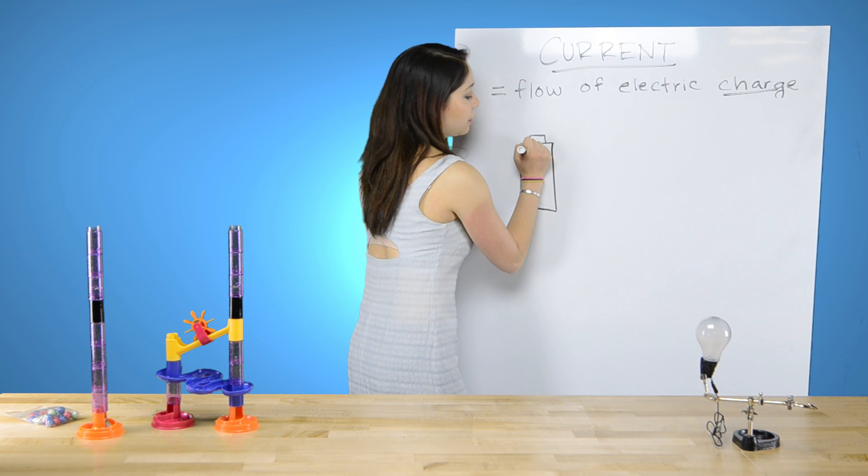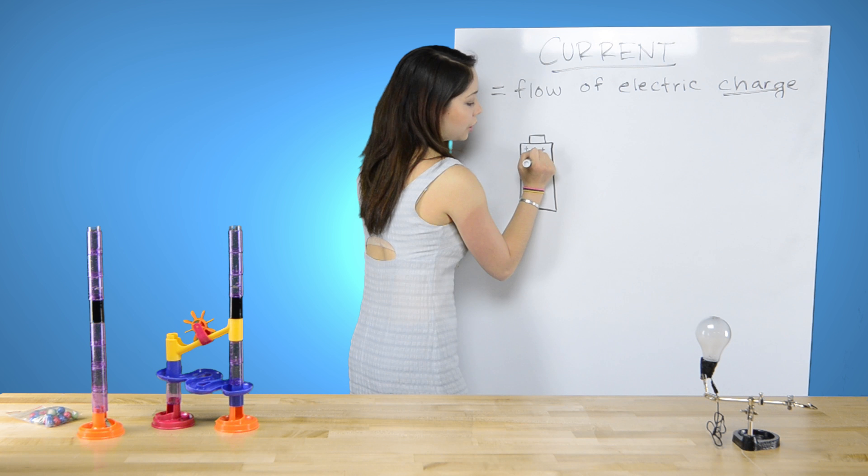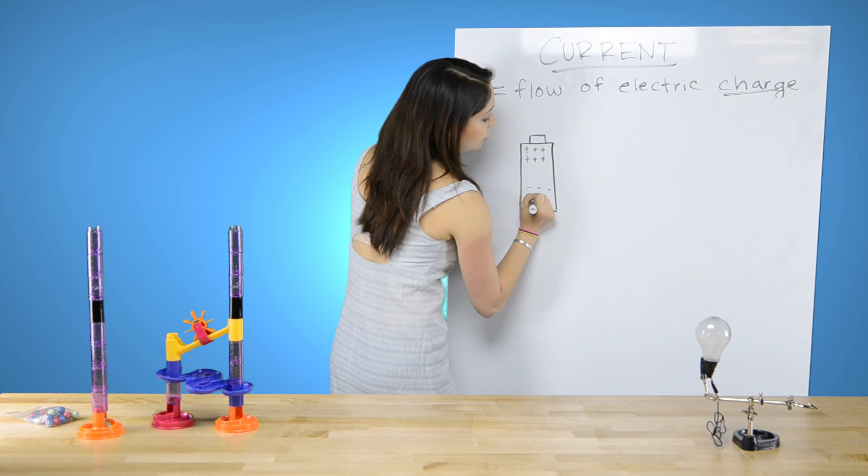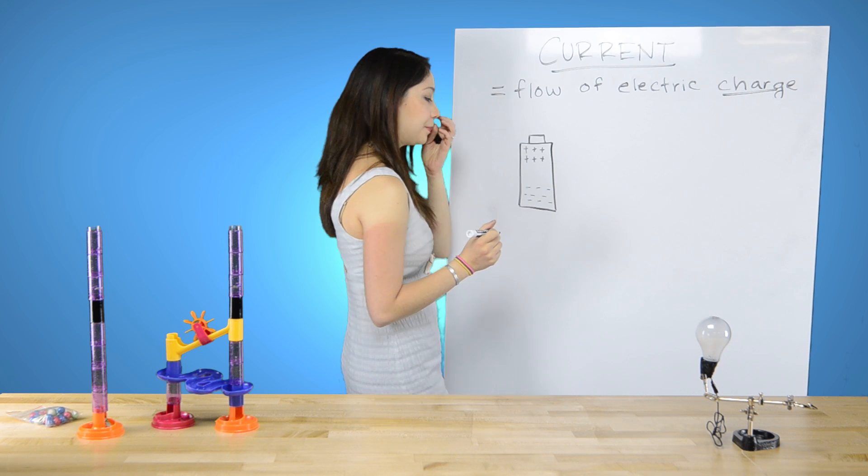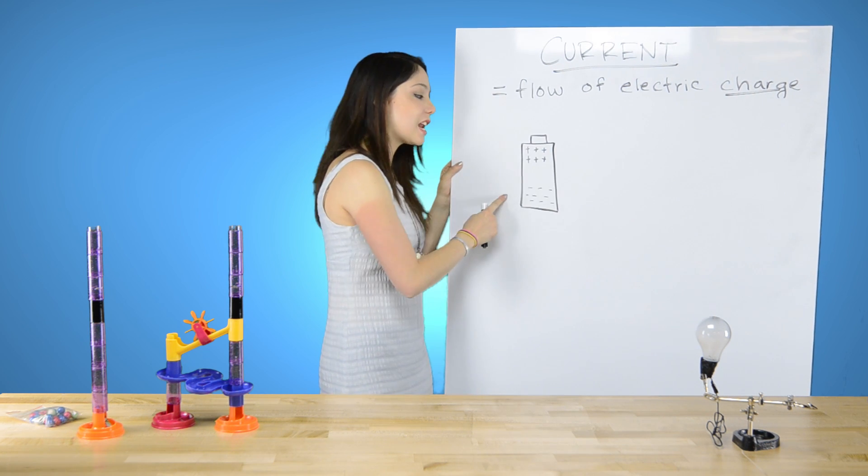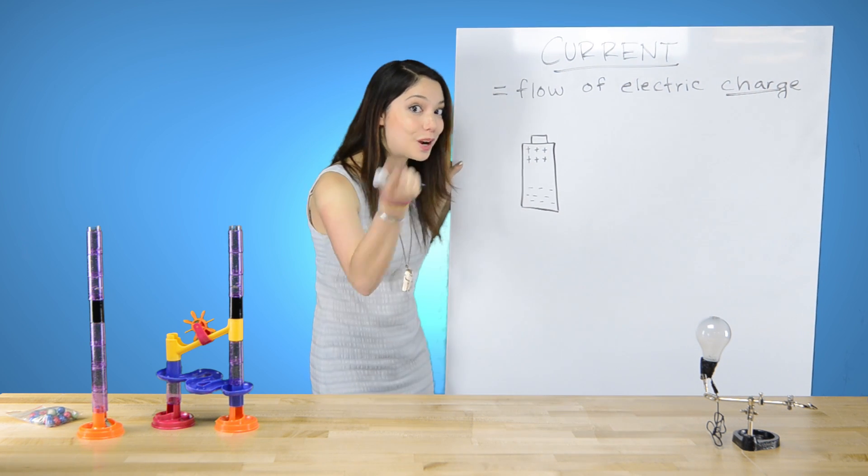This is the positive end. So this is where all the positive charges hang out. All the negatives are down here hanging out. Your battery is very positively charged on the positive end and negatively charged on the negative end of the battery. Surprise, surprise.